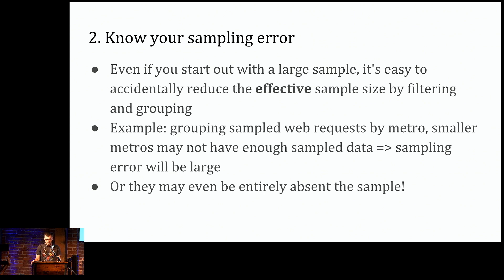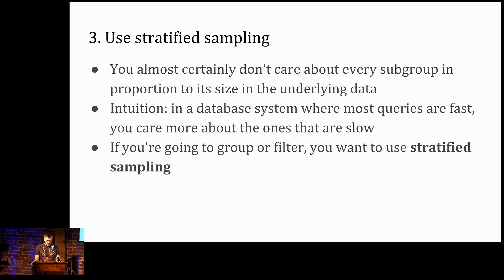For example, if you have web requests that are coming in that have an attribute for the source metro, and you group by this attribute, then for smaller metros you may not have enough sample data to get to the confidence, the error bound that you want. Or even worse, some really small cities could be entirely absent from the sample. So the third lesson from BlinkDB offers us a way for dealing with this, and that's stratified sampling. The key idea here is that there are more ways to sample than just the uniform sample, where each row has the same probability of appearing in the sample.